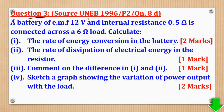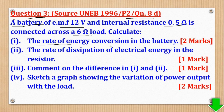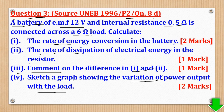Question 3 came from UNEB 1996, paper 2, question 8D. It says: a battery of EMF 12V and a given internal resistance is connected across a 6 ohm load. Calculate: (i) the rate of energy conversion in the battery, (ii) the rate of dispersion of electrical energy in the resistor, (iii) comment on the difference between (i) and (ii), and (iv) sketch a graph showing the variation of power output with the load.